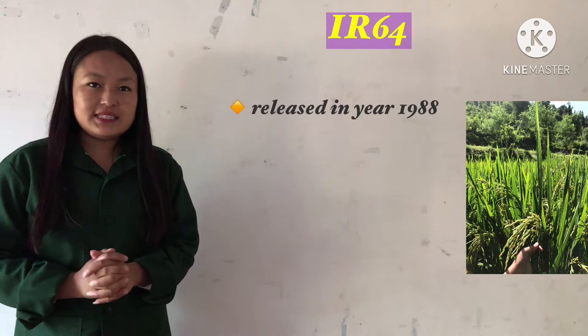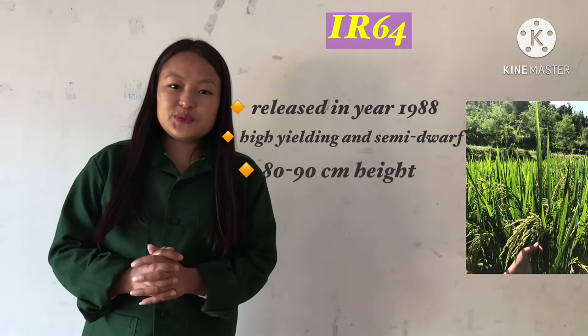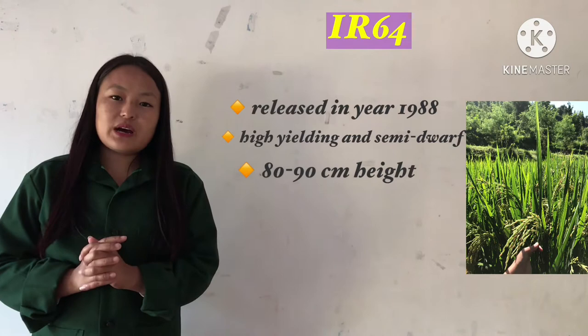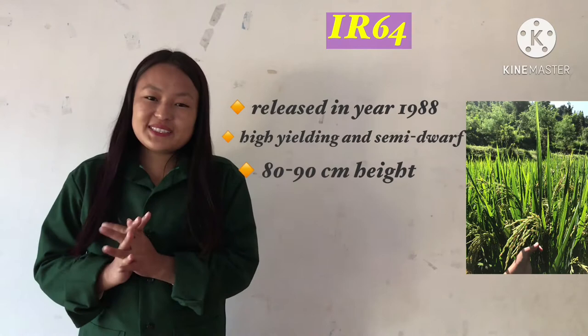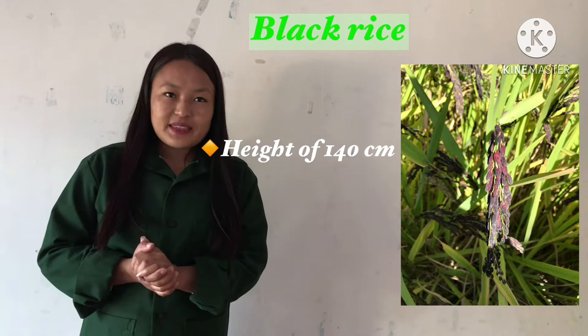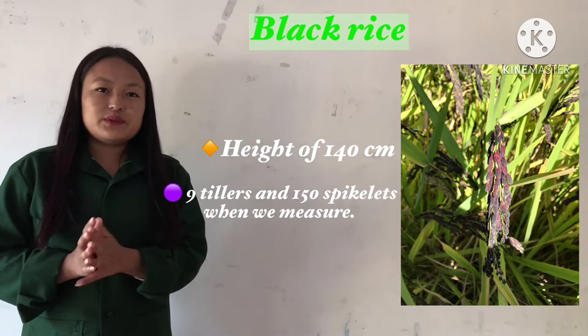IR64 was released in the year 1988. It is a high-yielding and semi-dwarf variety which is about 80 to 90 centimeters tall, and it matures in 145 to 150 days after sowing. This variety is also very responsive to higher fertilization and is one of the oldest improved varieties. Black rice was brought from Assam; it has a longest height of about 140 centimeters, a tiller count of about nine, and 150 spikelets.